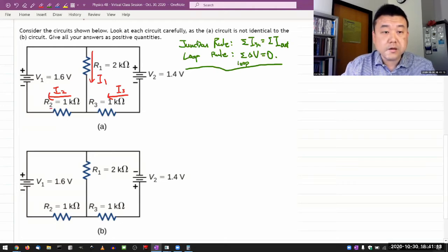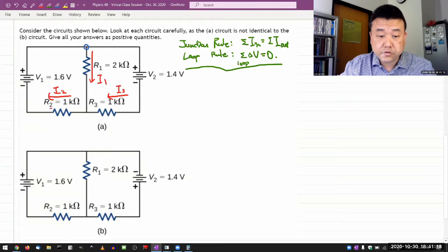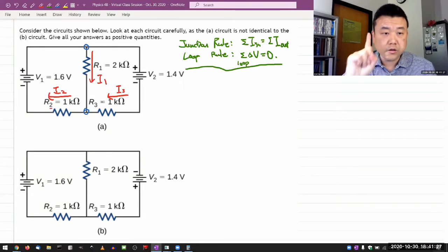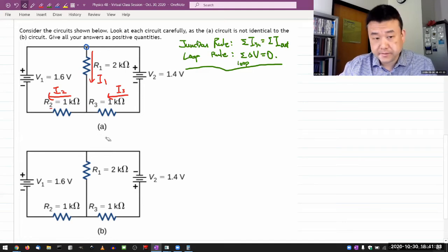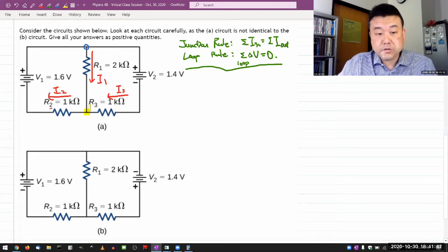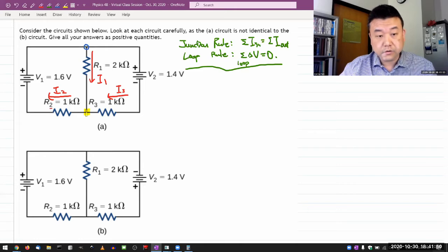I think I labeled all the currents. So I have three unknowns, which means I need three equations. So now I'm on the hunt for those three equations. I use the junction rule first because the junction rules are pretty simple to apply. In this circuit I have two junctions, and the simple rule I follow in applying junction rule is that I always leave one junction unused. The reason for that is I'm looking for an independent system of equations.